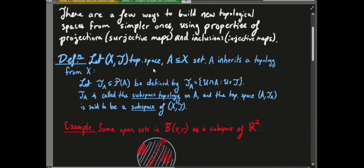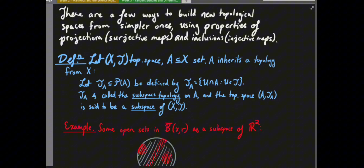A subspace: you take a topological space X with topology T, then take a subset A of X. That subset inherits a natural topology from X called the subspace topology. The idea is you take the open sets in the ambient space and intersect them with the subset — those intersections give you the open sets on the subspace.